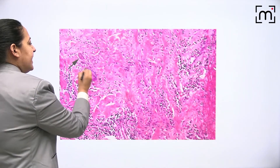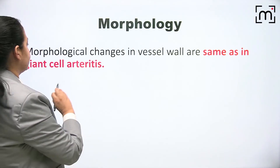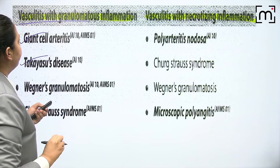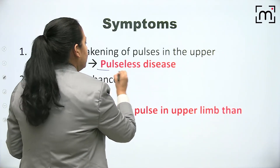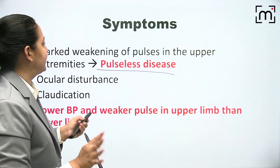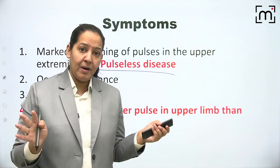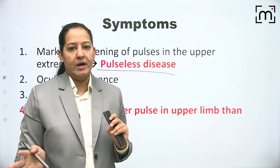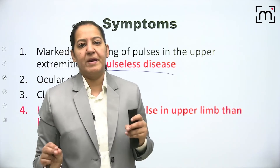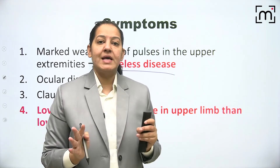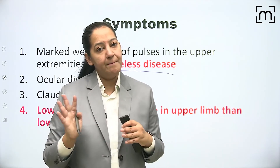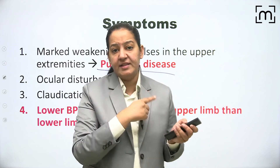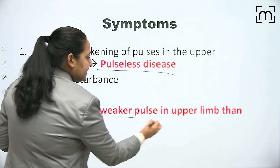Morphologically, Takayasu arteritis is exactly the same as temporal arteritis - granulomatous inflammation. Symptoms include absent pulse and low blood pressure in the upper limb compared to the lower limb, because the affected branches supply the upper limb but not the lower limb. This discrepancy in blood pressure between upper and lower limbs is the biggest diagnostic clue in exam questions.